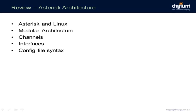The default directory for Asterisk configuration files is /etc/asterisk. There is one file where you can change those default directories: asterisk.conf. And we can also set a few options for the behavior of Asterisk there.